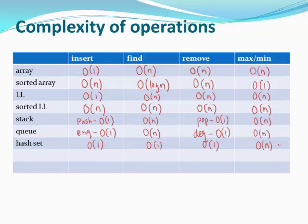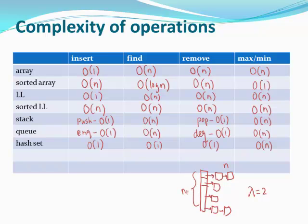In a hash table, you must look through all elements to find the largest key. For example, if the load factor is 2 and you have n keys, the table size is n/2, so you must navigate up to n/2 chains, with each chain requiring up to n operations. Therefore, finding max or min in a hash table is O(n).